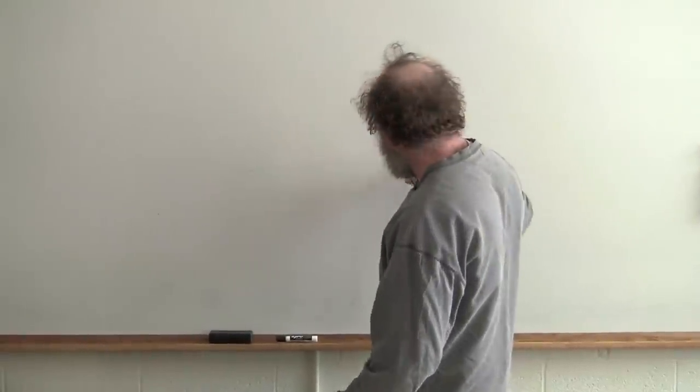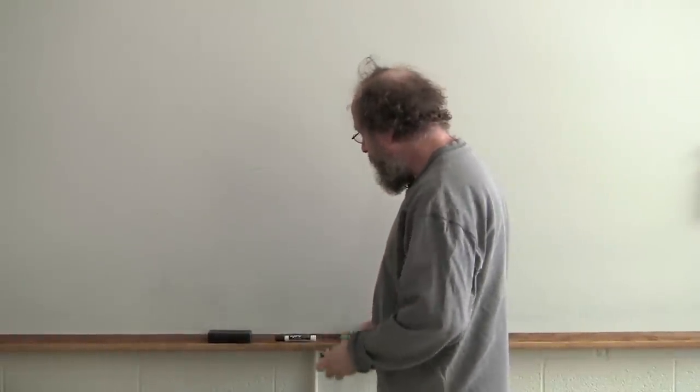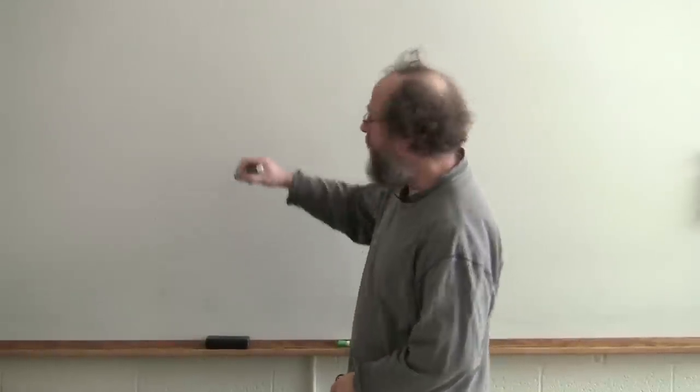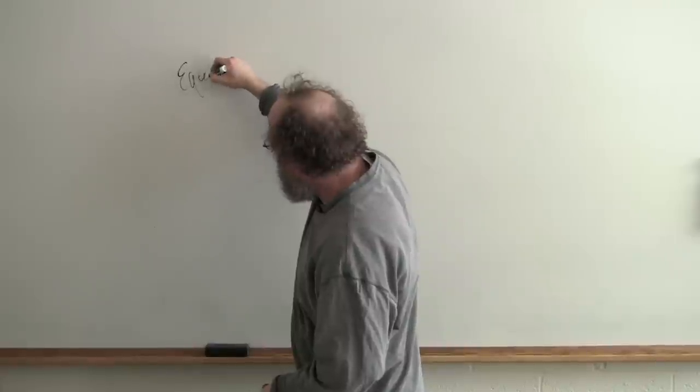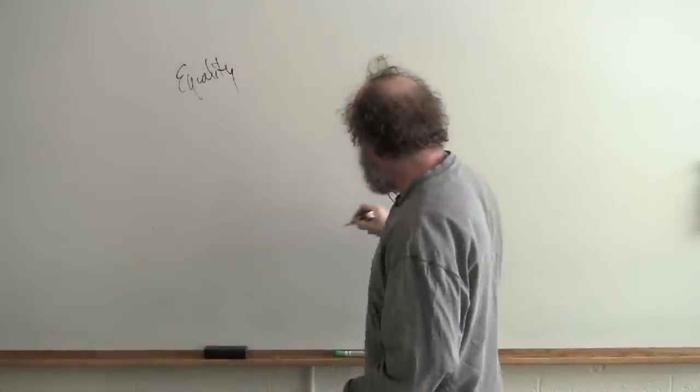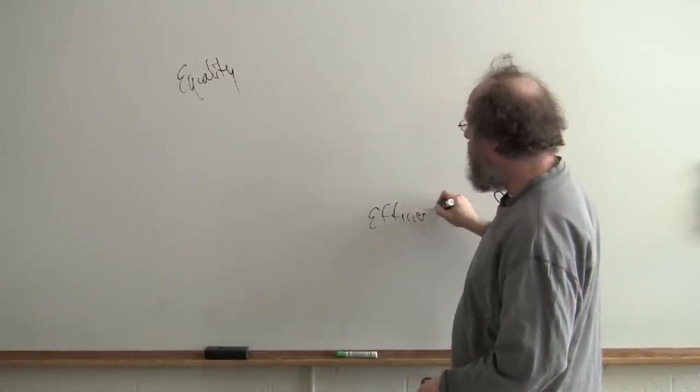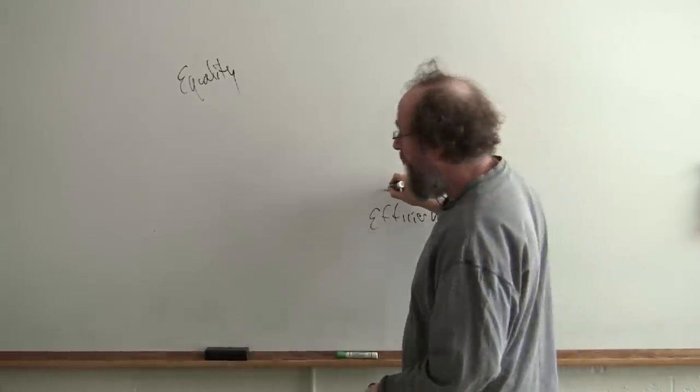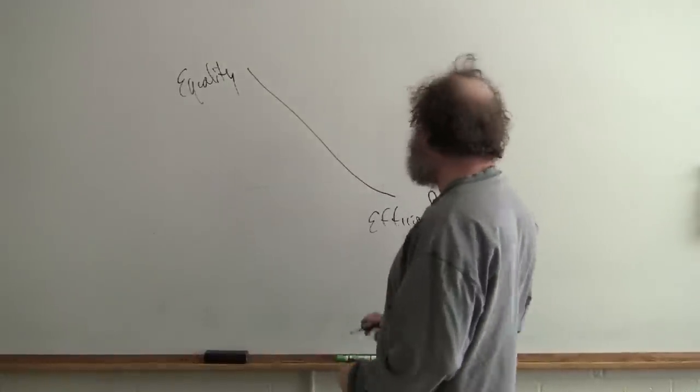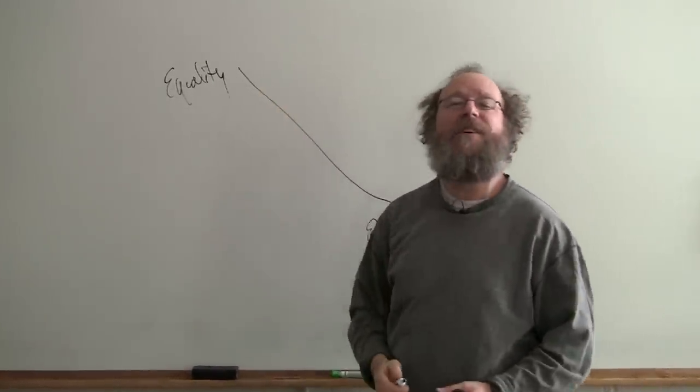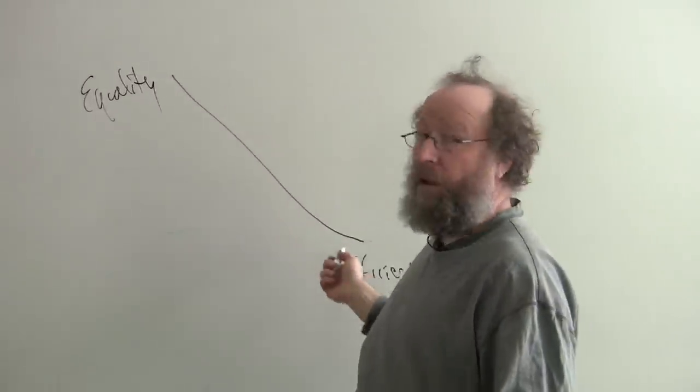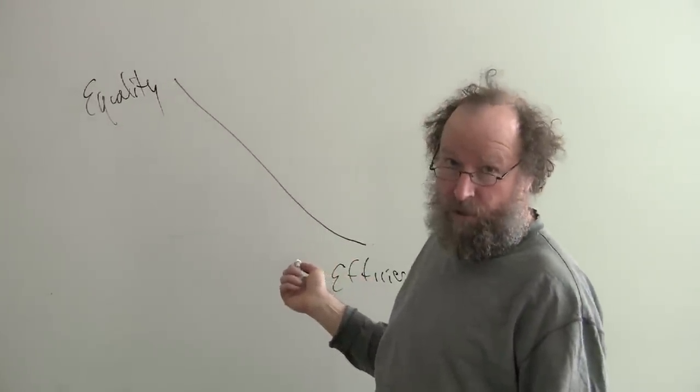Because of them, we're in a situation, Okun argues, where society faces a downward sloping trade-off between equality and efficiency. We can maximize efficiency at a very low level of equality, or we can maximize equality at a very low level of efficiency. We have to choose where we're going to be in between, he argues.